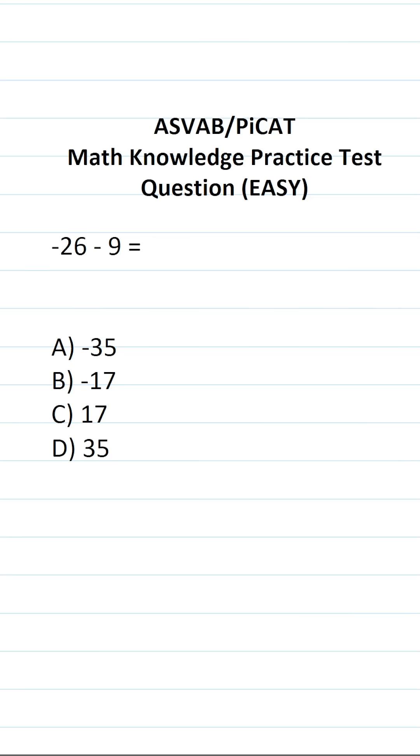This math knowledge practice test question for the ASVAB and PyCat says negative 26 minus 9 equals. On the ASVAB and PyCat, you're not given a reference sheet or a calculator.